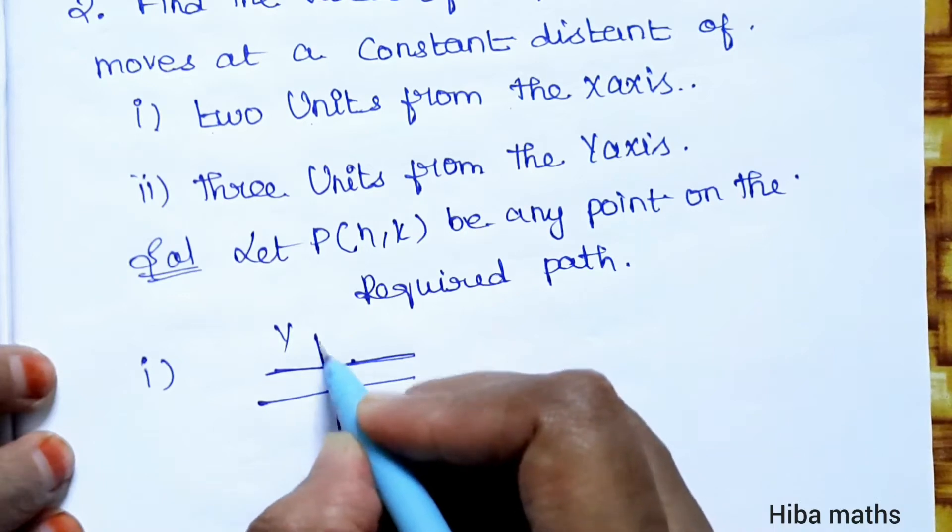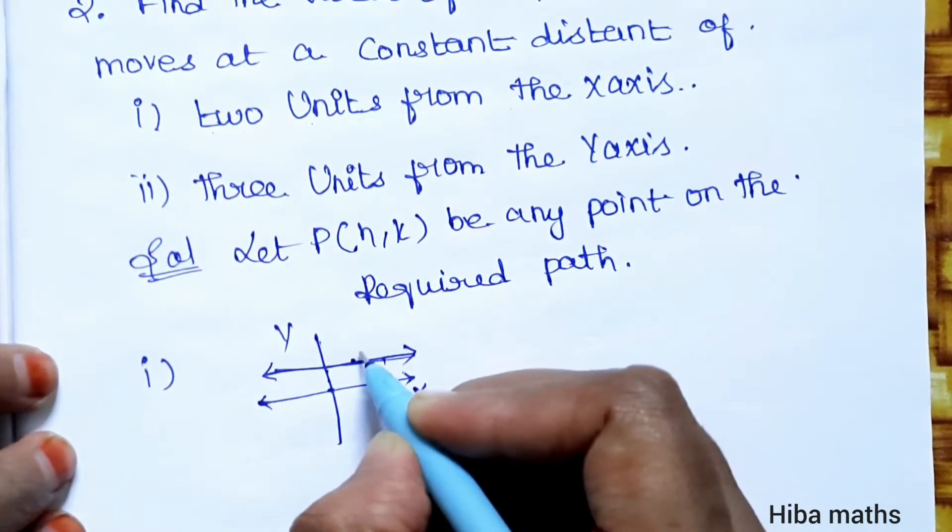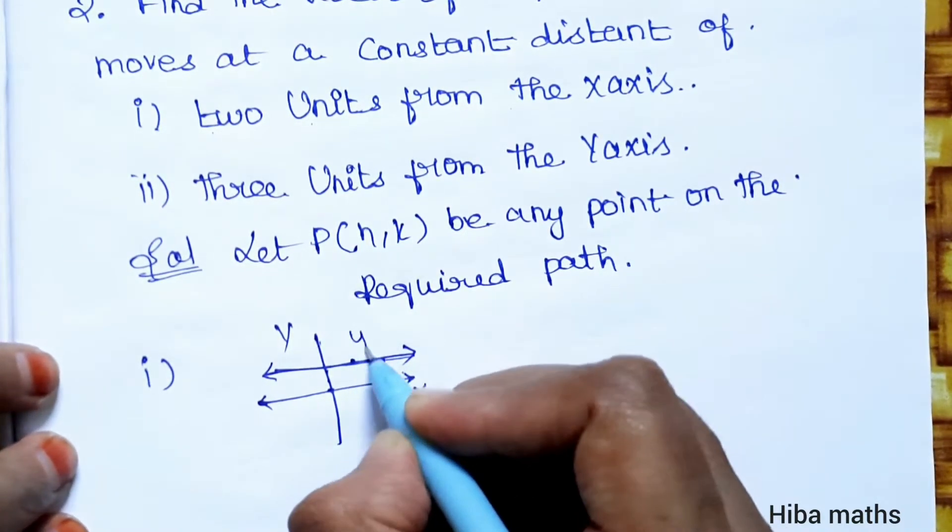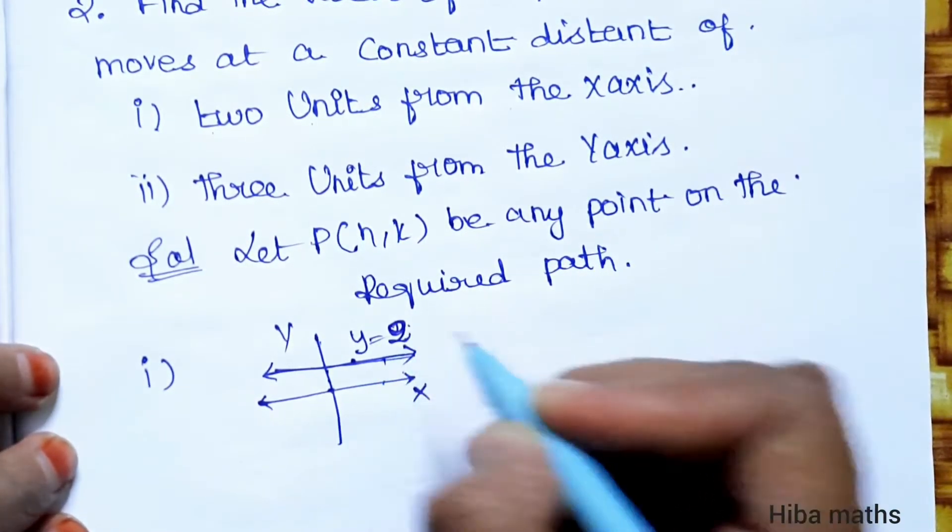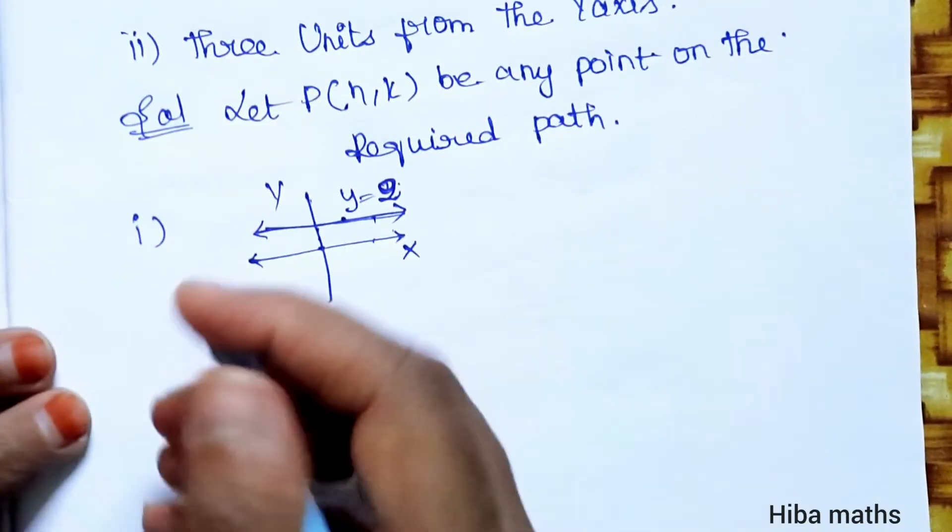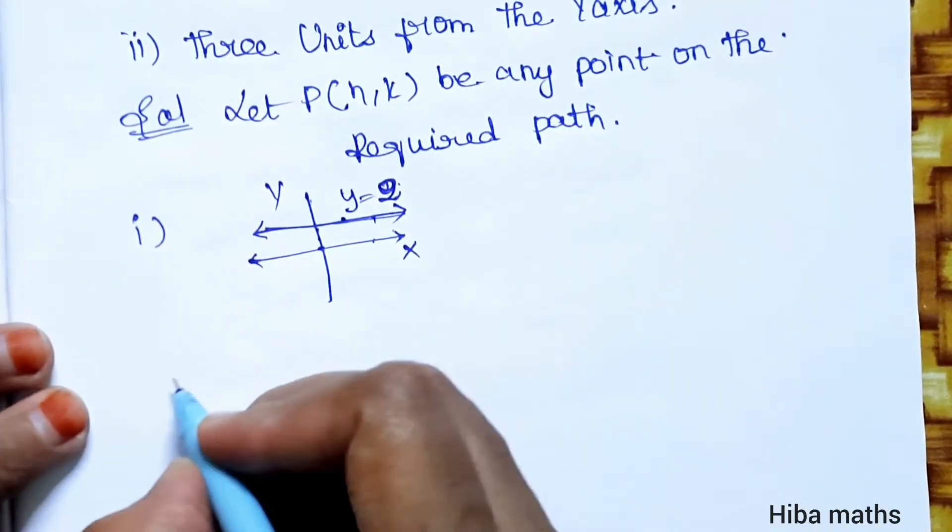So how do you find the x-axis parallel? Any line parallel to the x-axis is equal to y equals this. Let me explain how to write it: